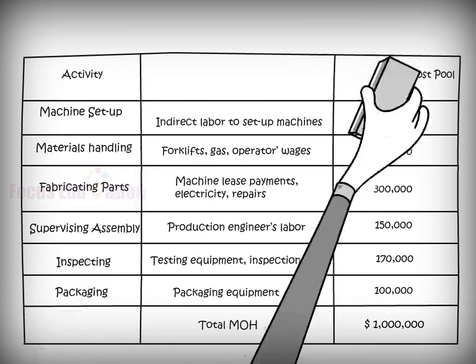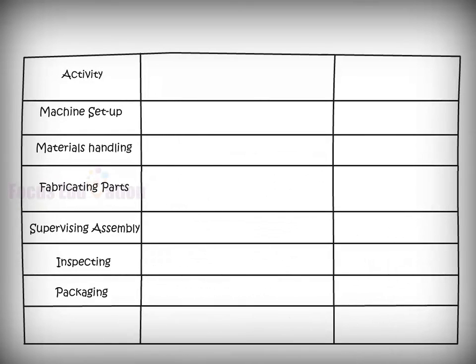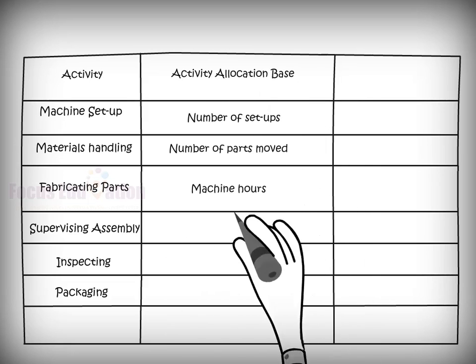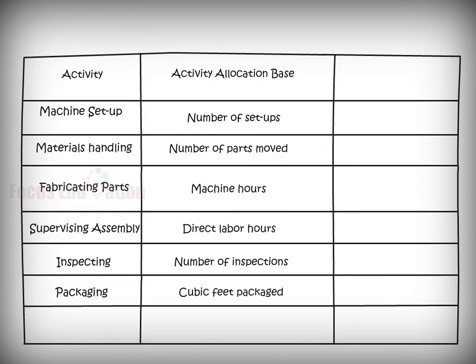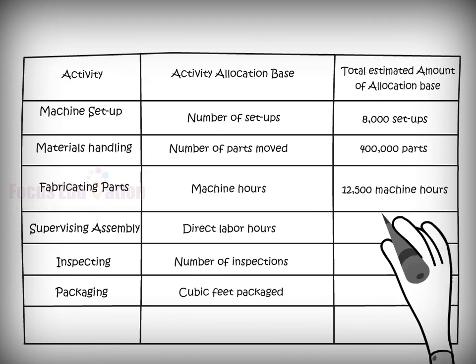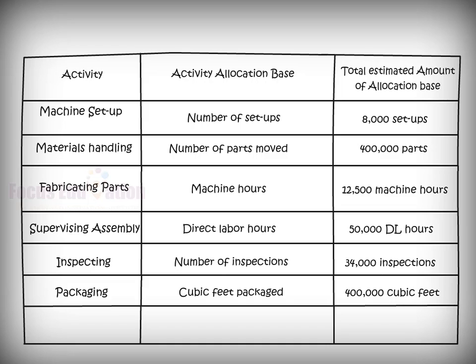For the second step, the managers need to identify a cost driver, which in turn becomes allocation base for each activity. This helps them estimate the total amount that will be used during the year. For example, the company selects number of setups as an allocation base for machine setup and estimates 8,000 setups as the total amount that will be used during the year.